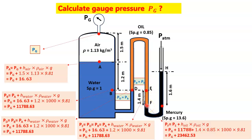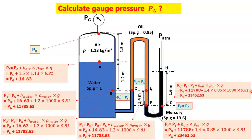Going downward through the oil column (h_oil = 1.4 m, SG_oil = 0.85), pressure at point F is: Pf = P + H_oil × ρ_oil × g = (Pg + 11788.63) + (1.4 × 0.85 × 1000 × 9.81) = Pg + 23462.53 Pa. Along the same horizontal reference, since mercury is continuous, Pc = Pf = Pg + 23462.53 Pa.